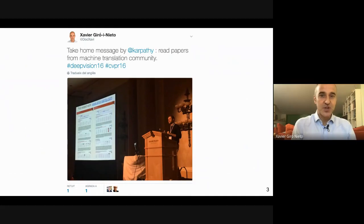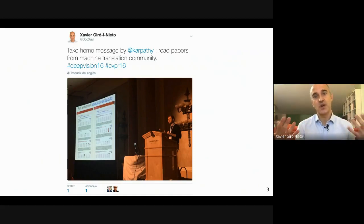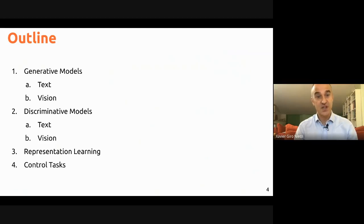My background is in computer vision, and my interest in the convergence of language and vision started after a talk by Andrew Karpathy at CVPR 2016 in Las Vegas, in which he gave the idea that the computer vision community should pay a lot of attention to what the machine translation community was doing. At that time, deep learning was in its early stages in computer vision, and both communities were starting to use the same tools, driving many exciting new applications and synergies.